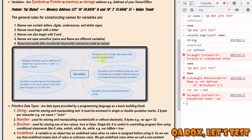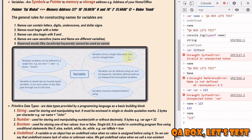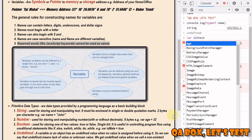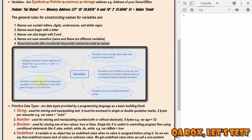A variable stores a single data value that can be changed later. For example, 'name' was 'QA Box' and we can change it to '123' - you can change it at a later point in time, but it can only store one value at a time. The 'var' and 'let' keywords must be initialized before using them. You can declare 'var age' and then at a later point set it to 23.